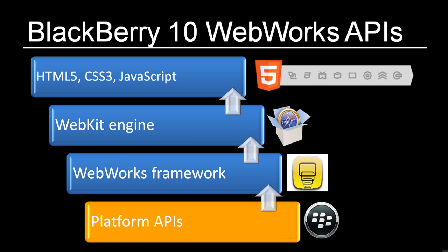The BlackBerry WebWorks framework also provides additional APIs for platform capabilities that are not available through the HTML5 standard. These platform APIs are actually JavaScript objects and enable a developer to include more advanced native functionality in their HTML5 applications. It is important to note that these APIs are only available within the context of a WebWorks application, not the browser.